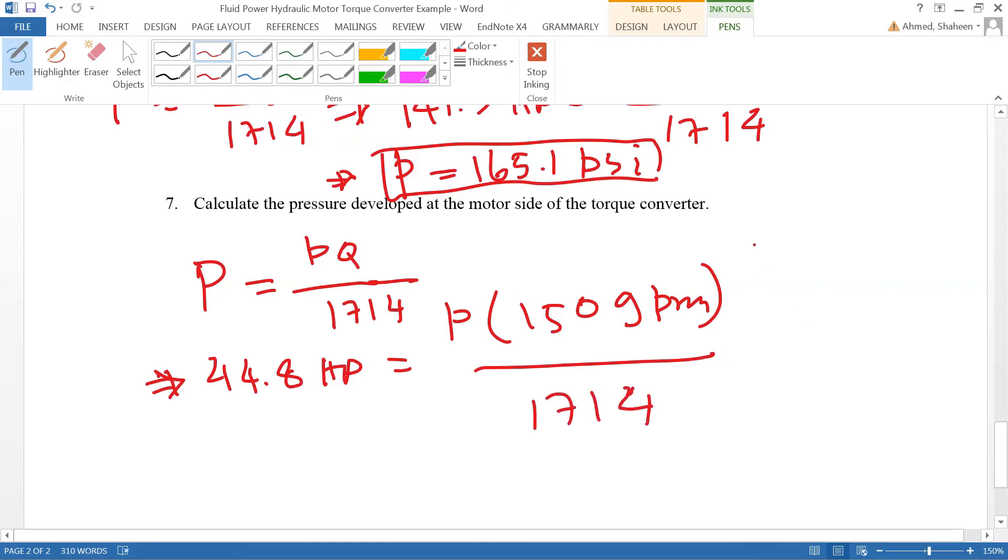Again I'm assuming that the volumetric efficiency is 100%. The pressure I calculated, I hope my calculation is correct, 512 PSI. I thought that should be smaller but that's what I got, 512. Let's see about this problem.